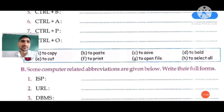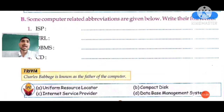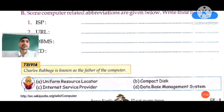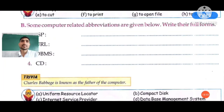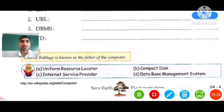Now some computer abbreviations are given. ISP full form is Internet Service Provider — it gives us internet services. URL stands for Uniform Resource Locator — it is the location of any HTTP file. DBMS stands for Database Management System. CD stands for Compact Disk. I hope you understood this chapter well. Write all these chapters in your book and notebook. Take care, thank you.